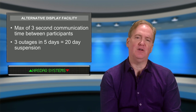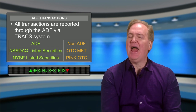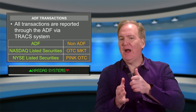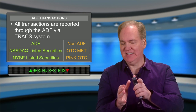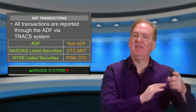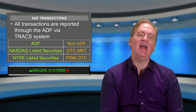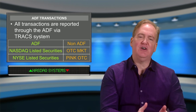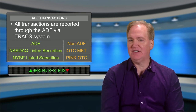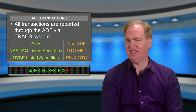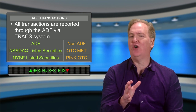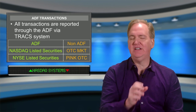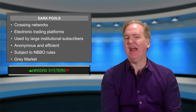ADF transactions are reported to ACT through the TRACS system — T-R-A-C-S. So we have the TRF, the ORF, and now TRACS for the ADF. It is very important to know what is quoted on the ADF and what is not. The only securities quoted on the ADF are NASDAQ-listed securities such as Microsoft, Apple, and Google, or New York Stock Exchange-listed securities such as IBM and General Electric. Securities traded in the OTC market or pink OTC are not quoted in the ADF — no OTC securities will be displayed in the ADF.